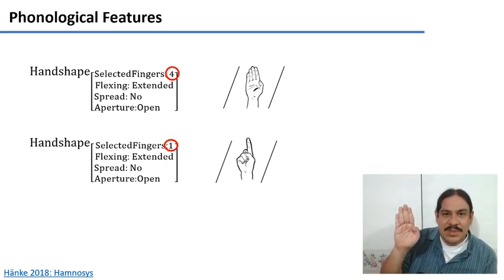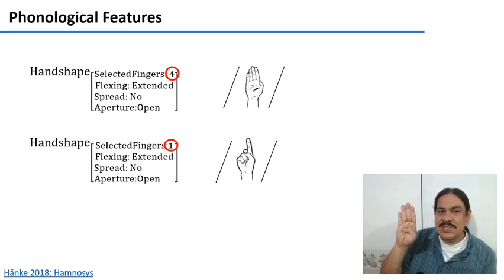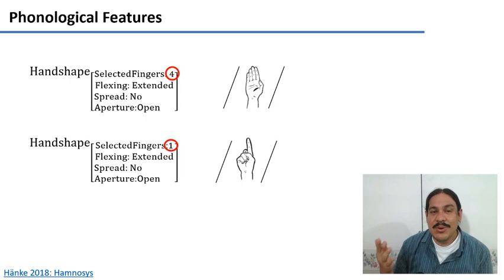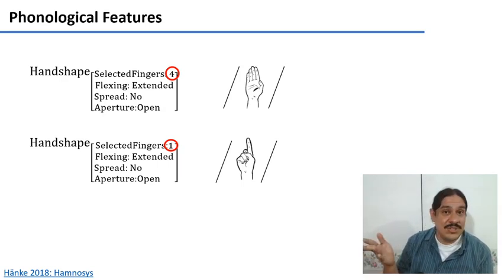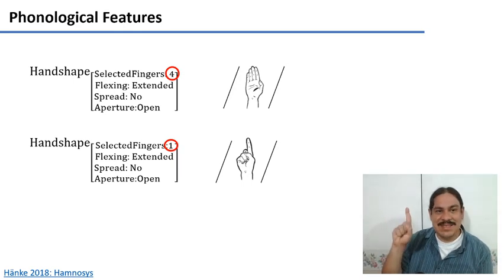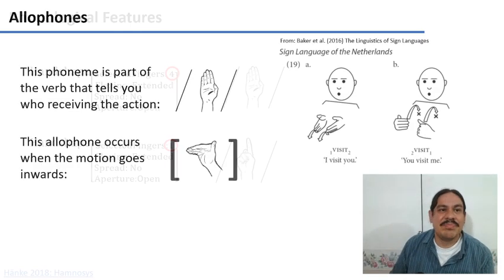This phoneme, the first one, is different from the second one because there's one feature that changed. The first phoneme had four extended fingers, and the second one has one extended finger, but all of the other values for the other features remain the same. Again, notice how this is akin to phonemes being voiced and voiceless, a Z versus an S, where if you change one feature you change the phoneme. The same in a sign language.